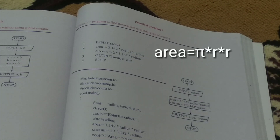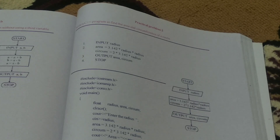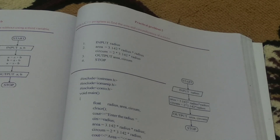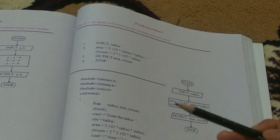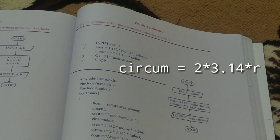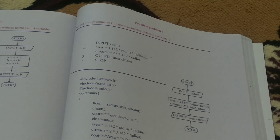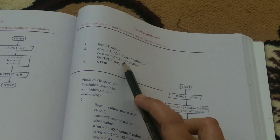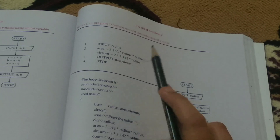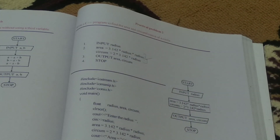The first formula: area is equal to pi into R into R. Pi value is 3.14, R is the radius, and you are going to input the value using cin. The second formula: circumference is equal to 2 into pi into radius. So pi value is 3.14, and these two formulas are used to find the area as well as circumference.